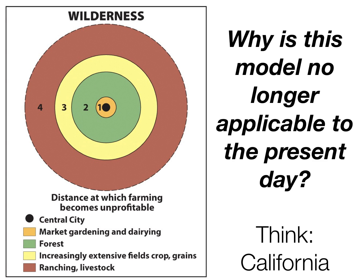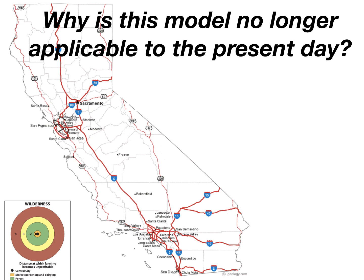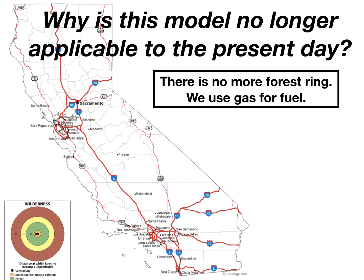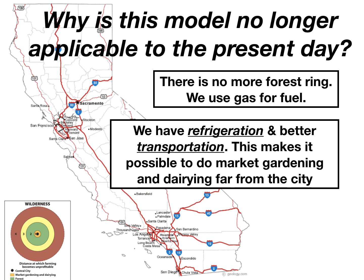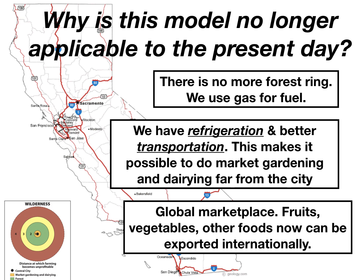Why is this model no longer applicable to the present day? For one, there is no more forest ring — we've cut down almost all of our native forest and now use gas for fuel rather than wood. We also have refrigeration and better transportation, with large refrigerated trucks that can travel long distances quickly. Von Thünen did not have this, living several hundred years ago. Additionally, we now have a global marketplace where fruits, vegetables, and other foods can be exported internationally.